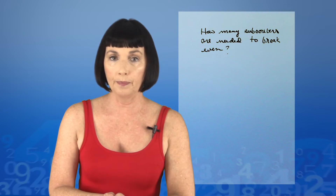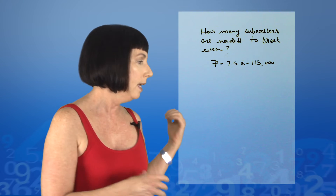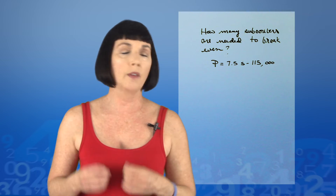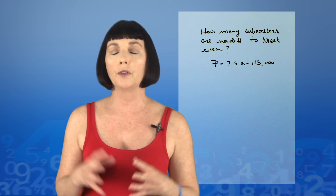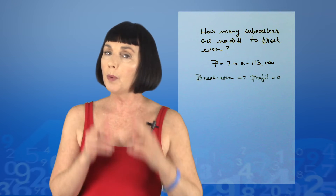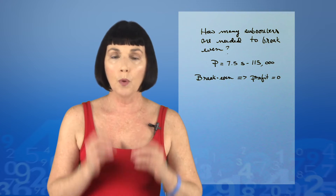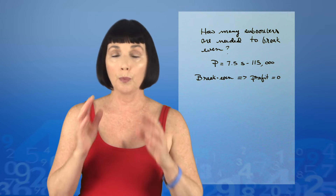Here's our next question: how many subscribers are necessary in order to break even? Our profit function p(s) is equal to 7.5s minus 115,000. The break-even point is the point at which the profit is equal to 0.